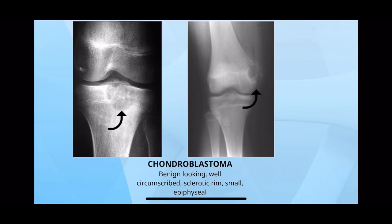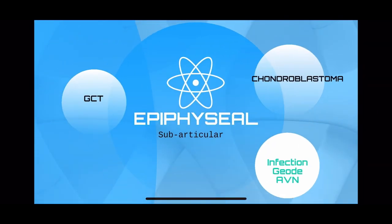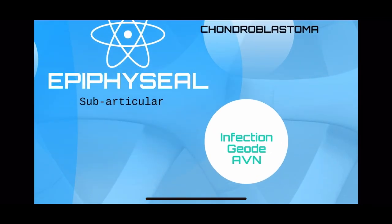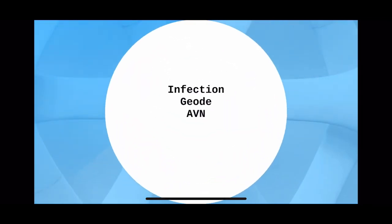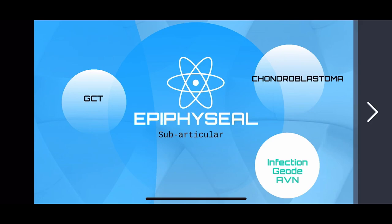The look is so benign that you cannot make a mistake in differentiating GCT and chondroblastoma. In the subarticular or epiphyseal region, you can have infections also, and GEOD — degenerative cysts or avascular necrosis cysts — but these are generally not asked in examinations.